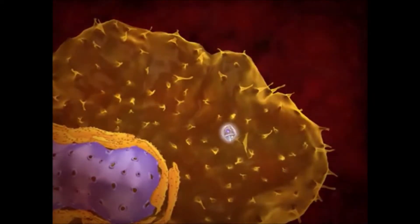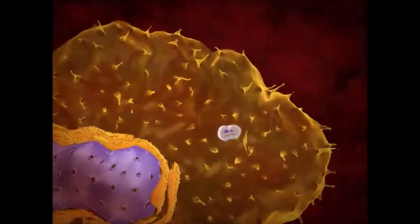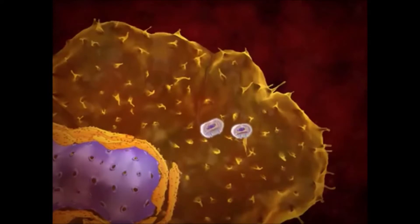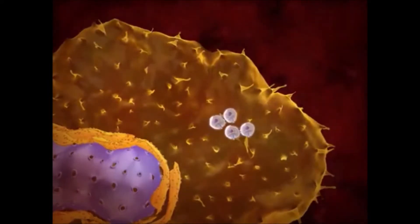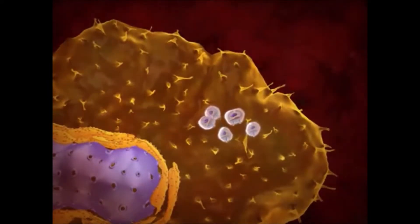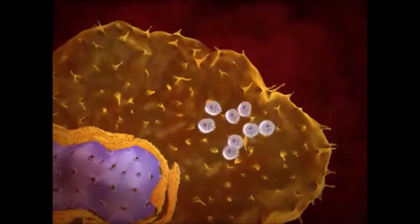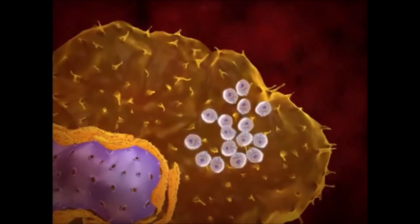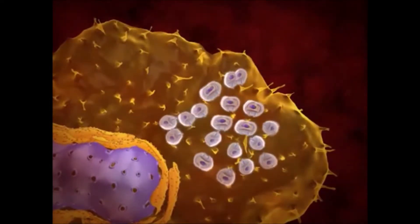The amastigotes are released into the cytoplasm of the host cell and divide multiple times. Observe how many amastigotes are accumulating through the division process. They can occupy the entire cytoplasm of the host cell.